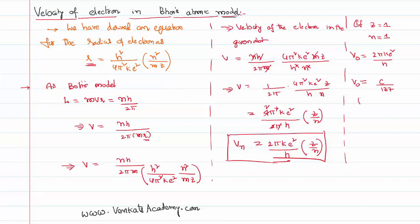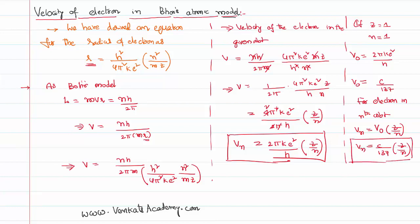So if you want to write for the electron in the nth orbit: vₙ = v₀ × (z/n), or approximately vₙ = (c/137) × (z/n). This is the equation for the velocity of the electron in the nth orbit.